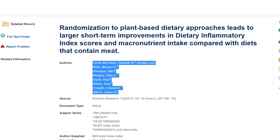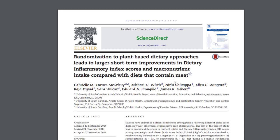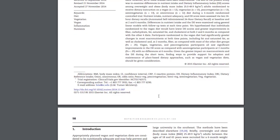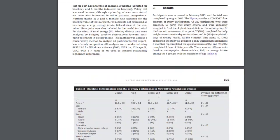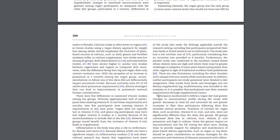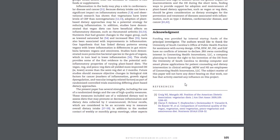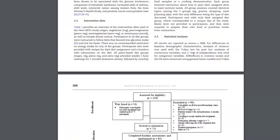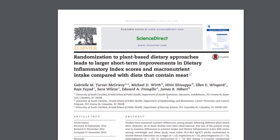Let's go ahead and open up the full text of the article to see if additional credentials are provided about the authors. We discover that the same information is provided here as in the database record, with no additional credentials. However, if we go down to the end of the article, there's an additional segment called Acknowledgement. This acknowledgement discusses the funding of the article. Although this holds no bearing for the WHO evaluation criteria, it does help with an evaluation criteria we will address later regarding conflict of interest or bias. Because no credentials were listed for the authors, I can use the information about author affiliations to locate more information.